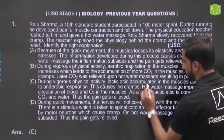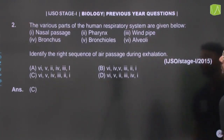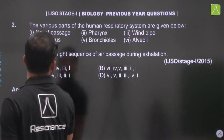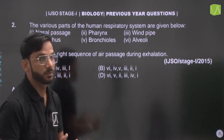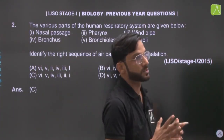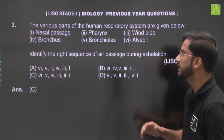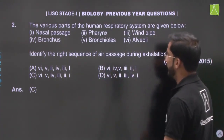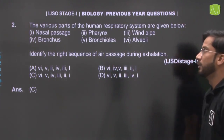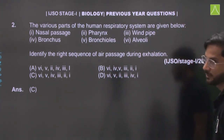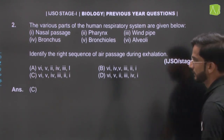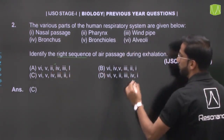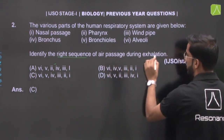Question number 2: The various parts of the human respiratory system are given — nasal passages, pharynx, windpipe, bronchus, bronchioles, and alveoli. We have to identify the correct sequence in which air passes during exhalation.